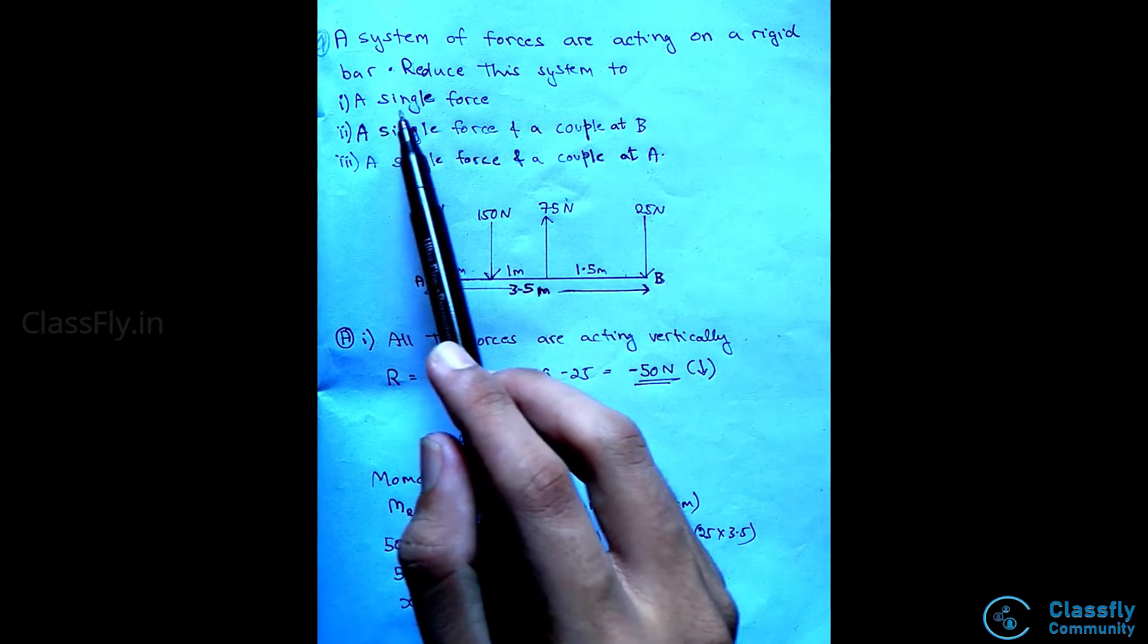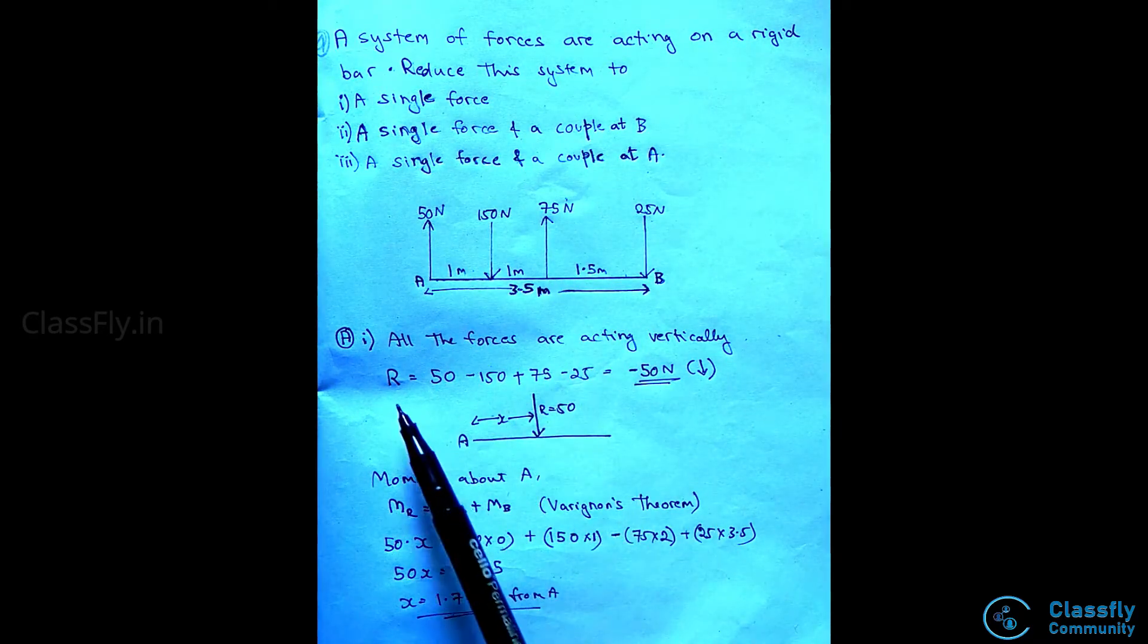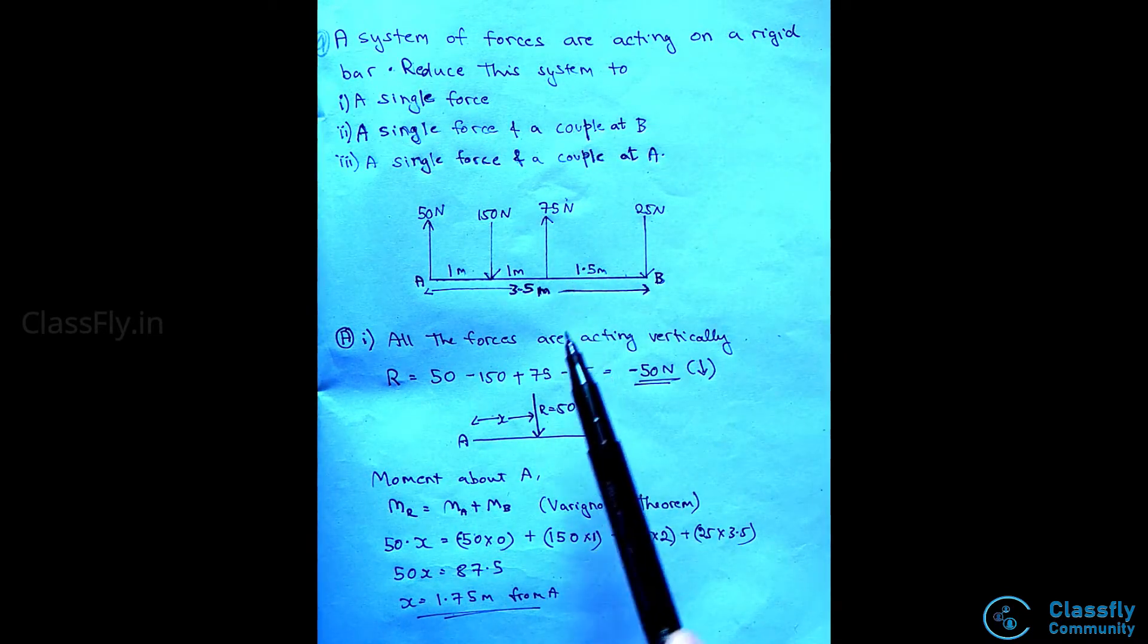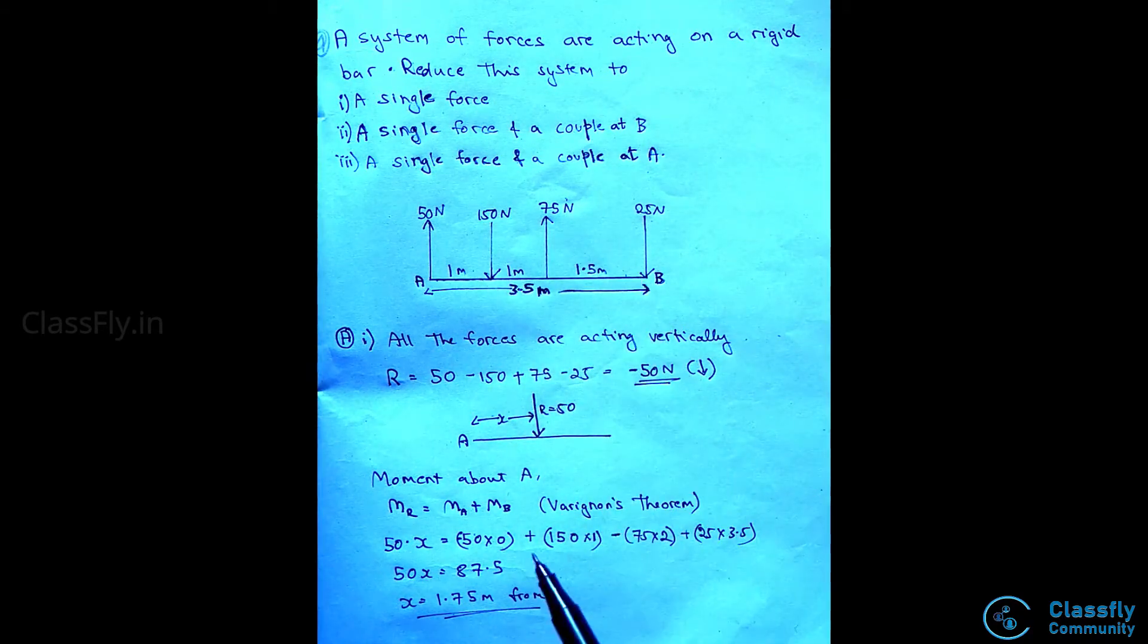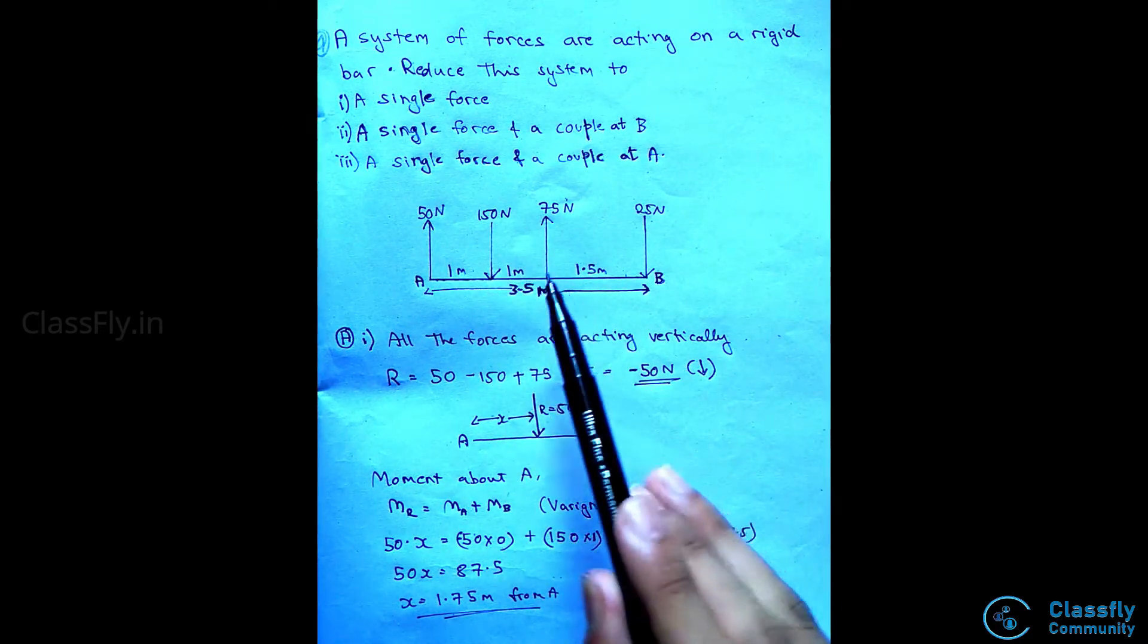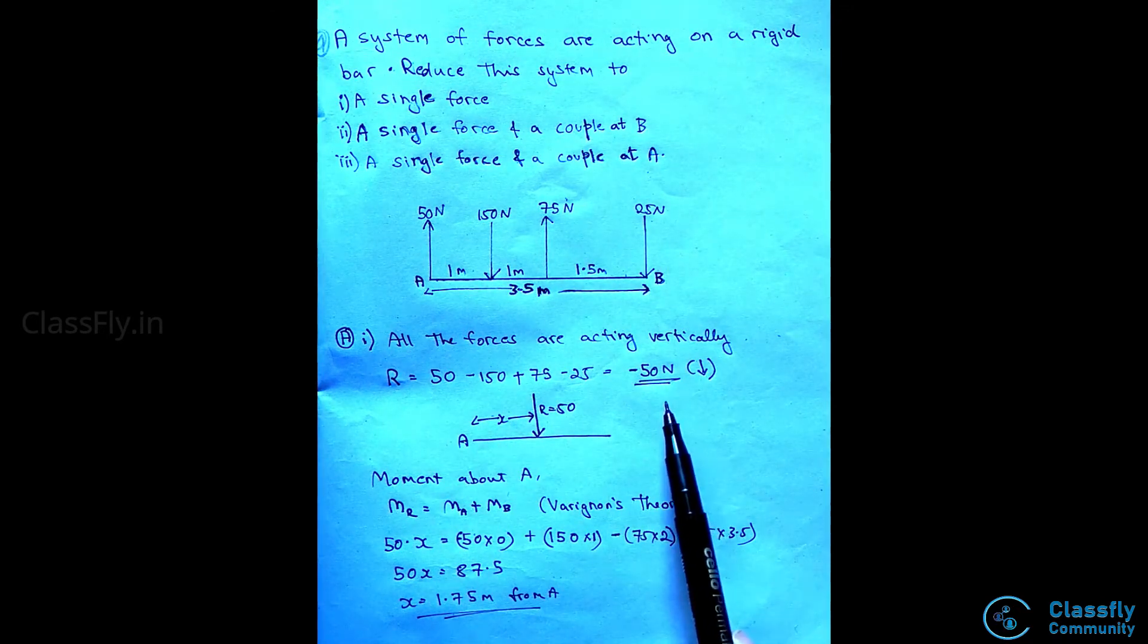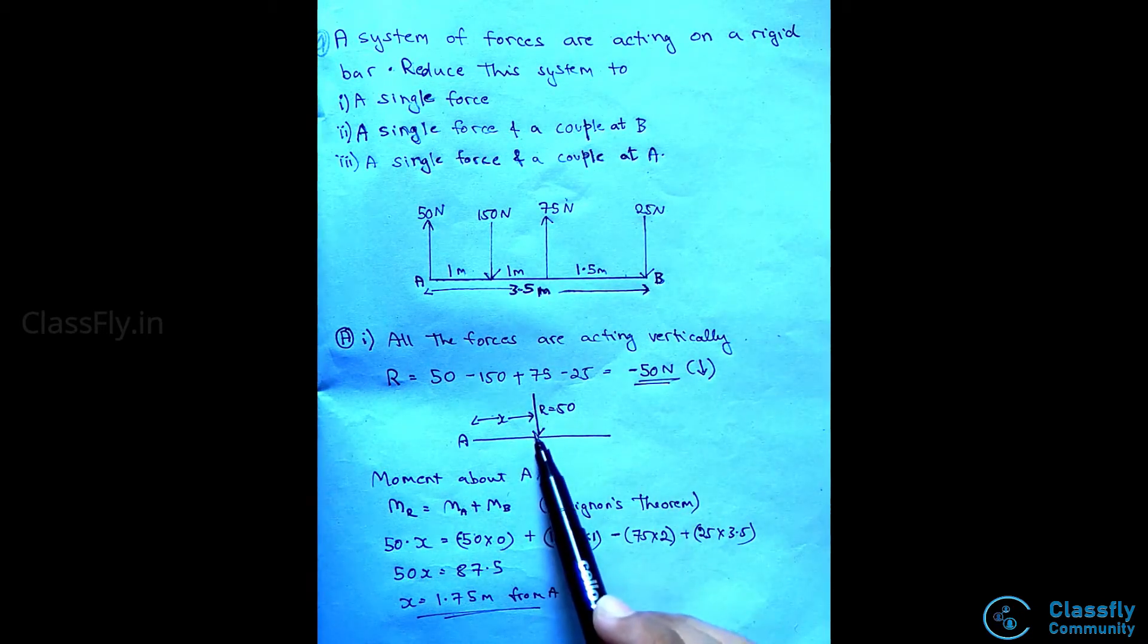First they have asked us to find a single force. This is nothing but the resultant force, which is given by summation of all the forces. Here, there is no need to take components as all the forces are vertical. R is given by 50 Newtons minus 150 Newtons plus 75 Newtons minus 25 Newtons. The resultant force will be minus 50 Newtons. This states that the resultant force is 50 Newtons acting in the downward direction.